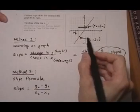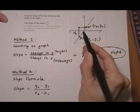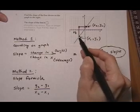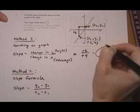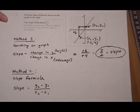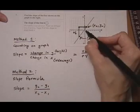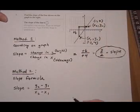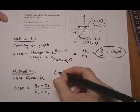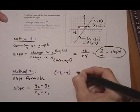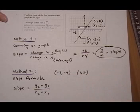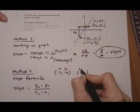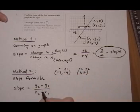The first point is at x equals minus 3 and y equals minus 4, so we have the point (−3, −4). The second point is at 1, 2. So we have (−3, −4) and (1, 2). Once you get the points off your graph, it just turns into plugging your points into the formula.